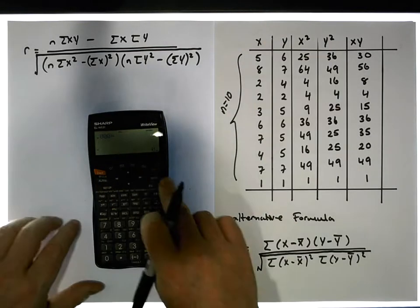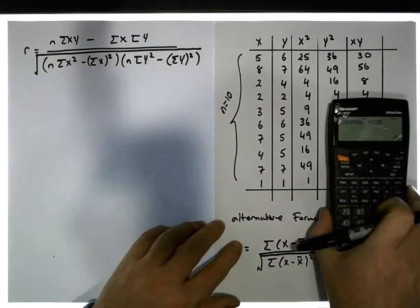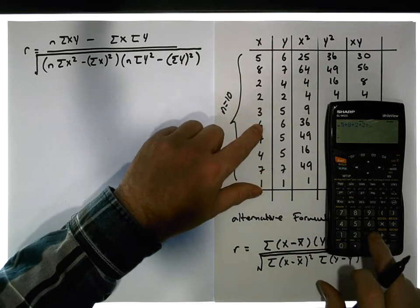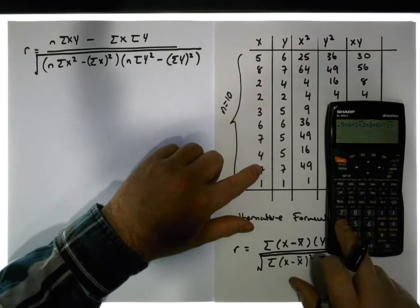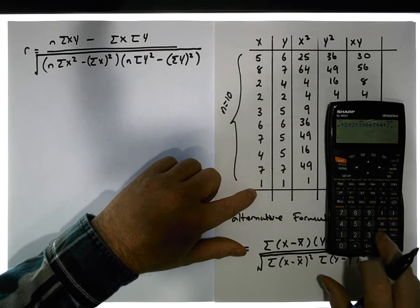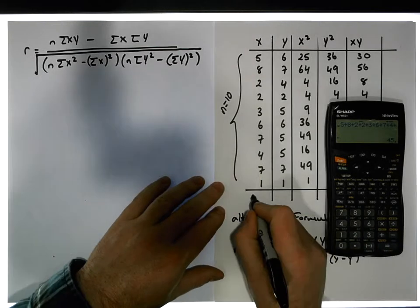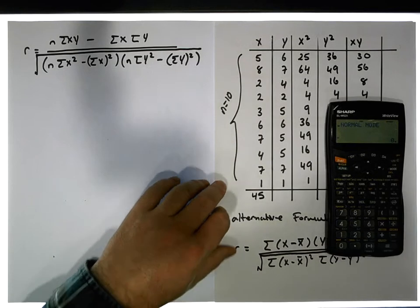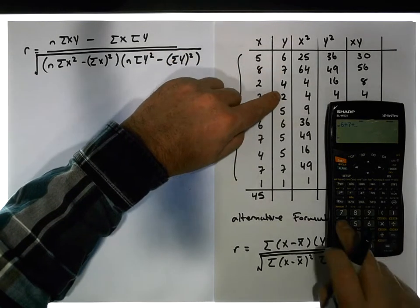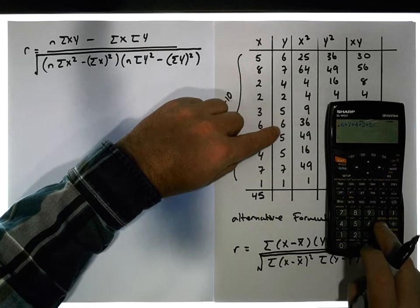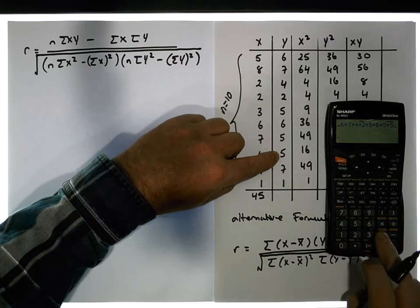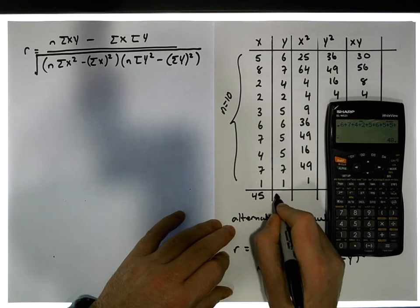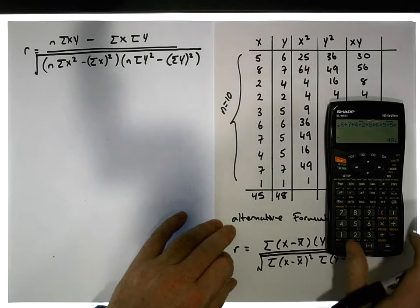So what I need to do is sum up all these values. I'll do this on the calculator really quickly. So we have 5 plus 8 plus 2 plus 2 plus 3 plus 6 plus 7 plus 4 plus 7 plus 1, which gives us a total of 45 in the x column. For the y column: 6 plus 7 plus 4 plus 2 plus 5 plus 6 plus 5 plus 5 plus 7 plus 1 gives us a total of 48 in the y column.